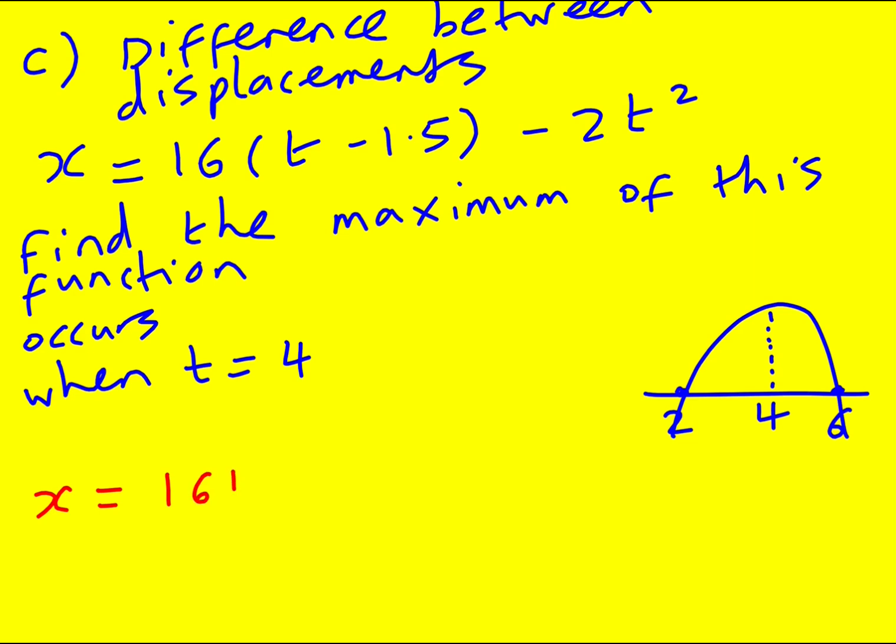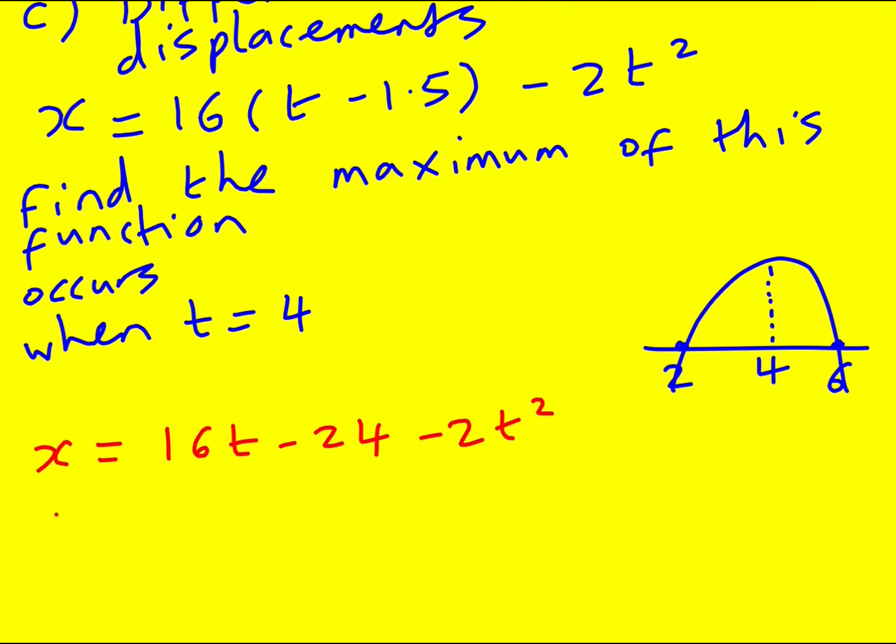So if you realize that, you can do this question quite quickly. If you don't realize it, then you can still get it by differentiating. And it only works here because it's a quadratic. So it's going to be x is 16t minus 24 minus 2t squared. And now I'm going to differentiate it to find the maximum. dx by dt is going to be 16 minus 4t equals 0 for stationary points. And therefore, t equals 4 at the stationary point.